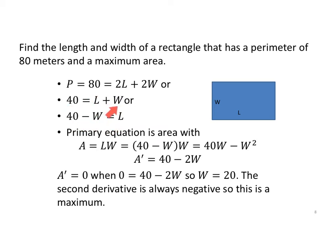I've already solved for one variable. I should have written down my primary equation first. My area is length times width for a rectangle. But I know that length is 40 minus width. So 40 minus width times width is 40w minus w squared. The derivative is 40 minus 2w.